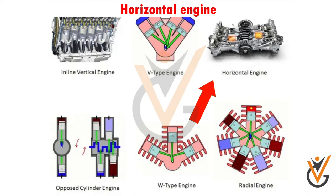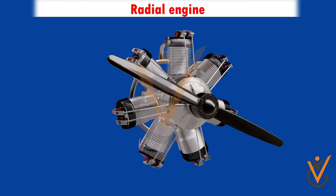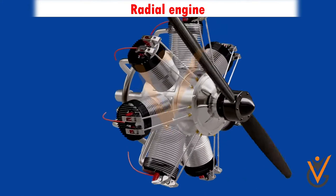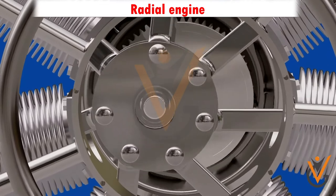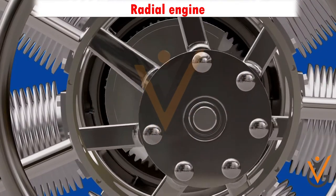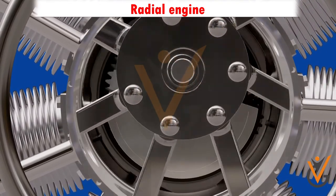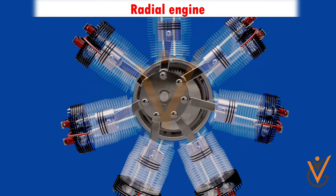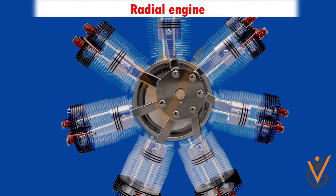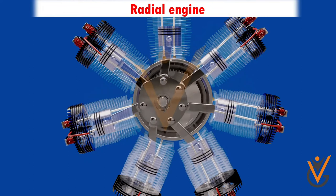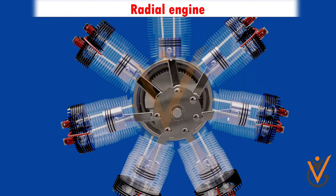In horizontal engines, the cylinders are placed in a horizontal position as shown in the video. A radial engine is a reciprocating type internal combustion engine configuration in which the cylinders radiate outward from a central crankcase like the spokes of a wheel. When viewed from the front, it resembles a stylized star and is called a star engine. Before gas turbine engines became predominant, radial engines were commonly used for aircraft.